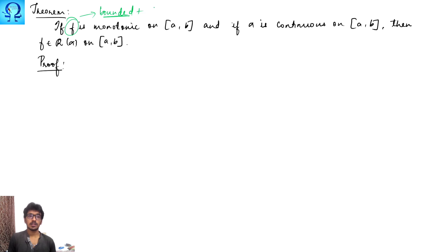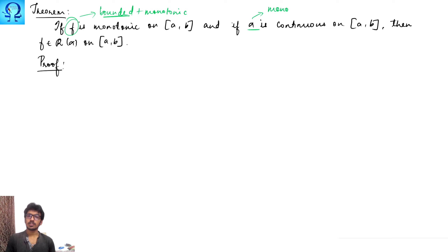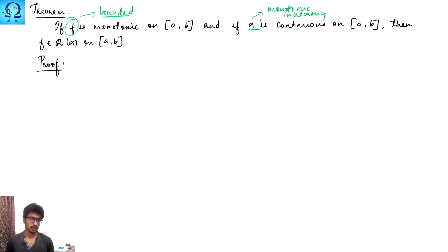Recall from the previous lectures that f is always a bounded function — this is a basic assumption. Along with boundedness, we have included monotonicity as well. And alpha, in general, is a monotonically increasing function. In addition to this, we have included continuity of alpha.